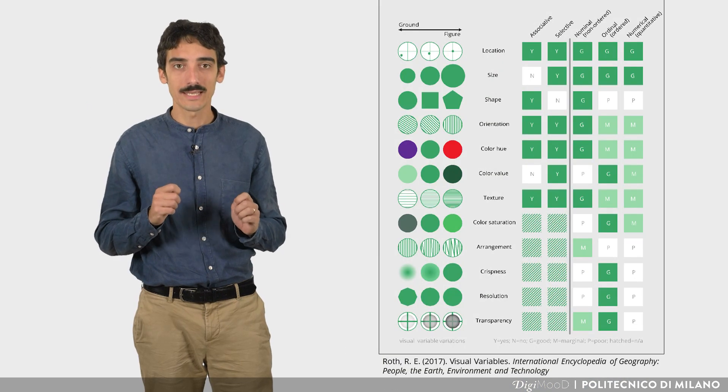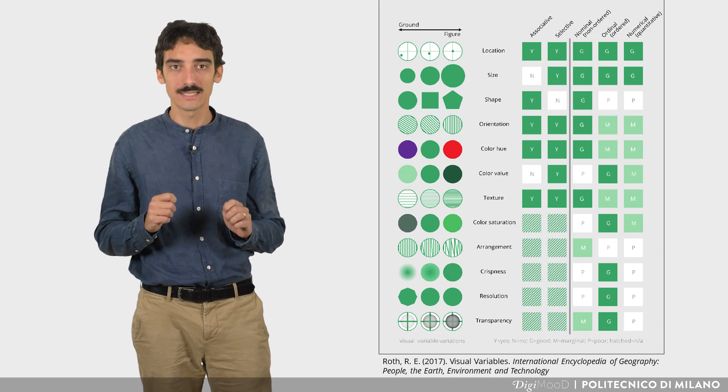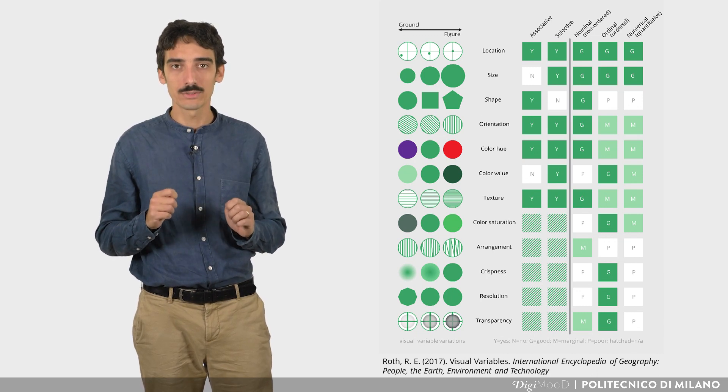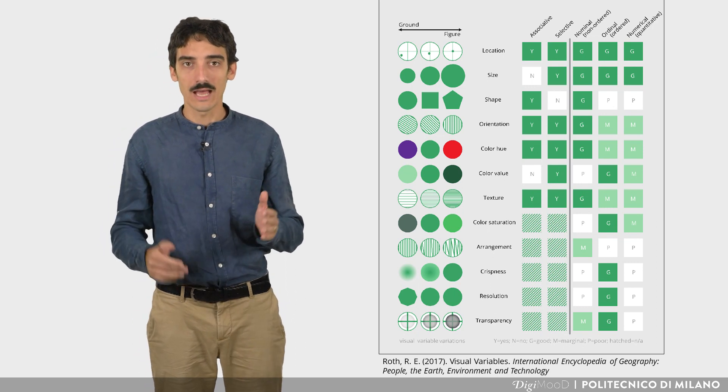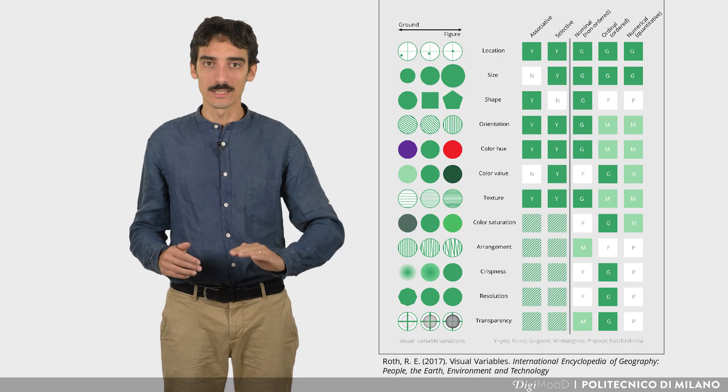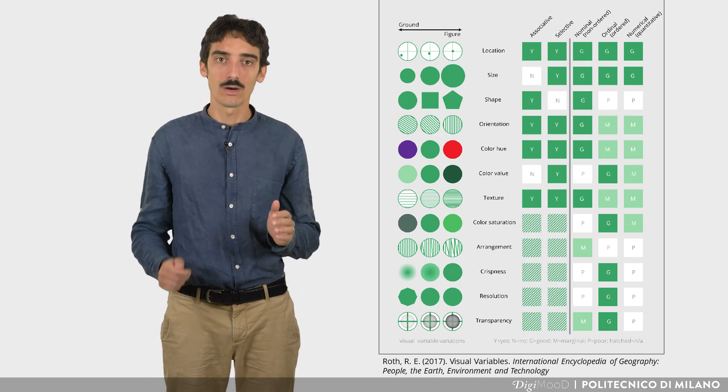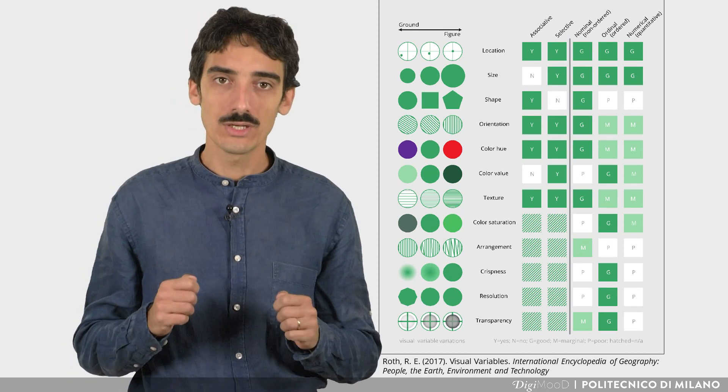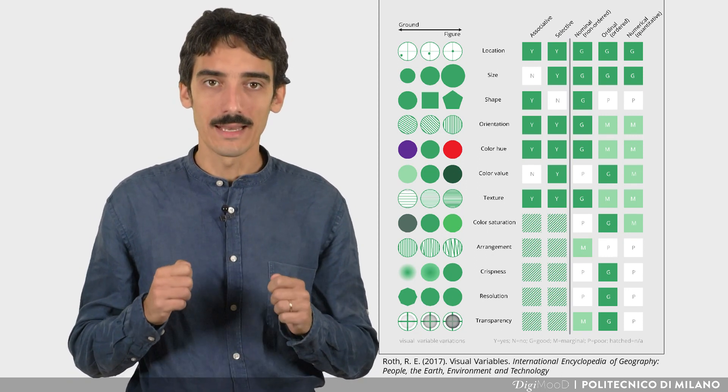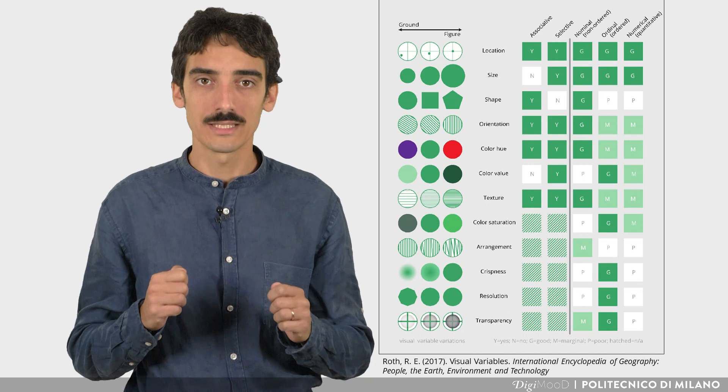In this table, you can see the result of the study in which visual variables were tested among a group of people. Variables are ranked from the most efficient to the least one, according to the number of tasks they allow. The visual features, therefore, can allow the reader to perform different operations.